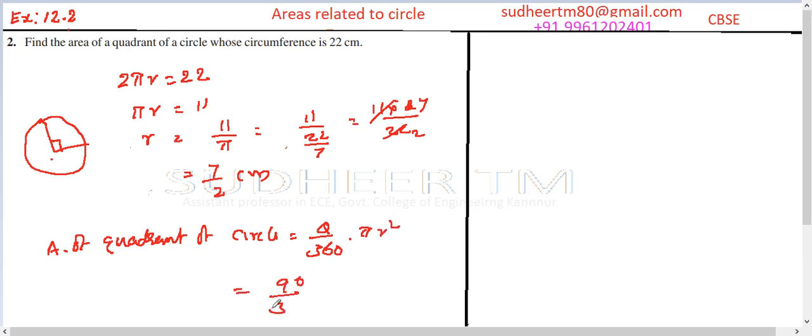What is theta? Theta is 90. So 90/360 into π into 7/2 into 7/2, which is equal to 1/4 into 22/7 into 7/2 into 7/2. The 7 cancels here, leaving 11 into 7 which is 77.